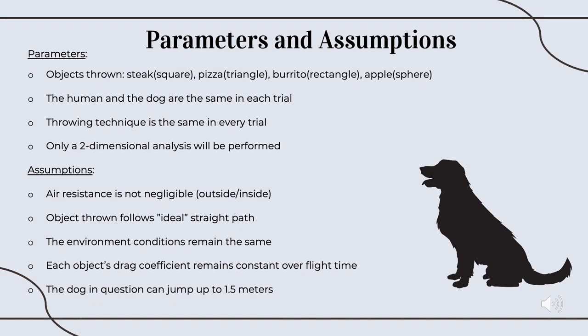To set up our scenario, the following parameters and assumptions have been determined. For parameters, we decided that the objects thrown are going to be a burrito representing a rectangle, a pizza slice representing a triangle, an apple representing a sphere, and a steak representing a square. The second one is that the same dog and human are going to be observed for every trial to make it fair. Third, the throwing technique is going to be the same every trial to avoid bias. And the last one is that we're only going to be performing the analysis in a two-dimensional plane.